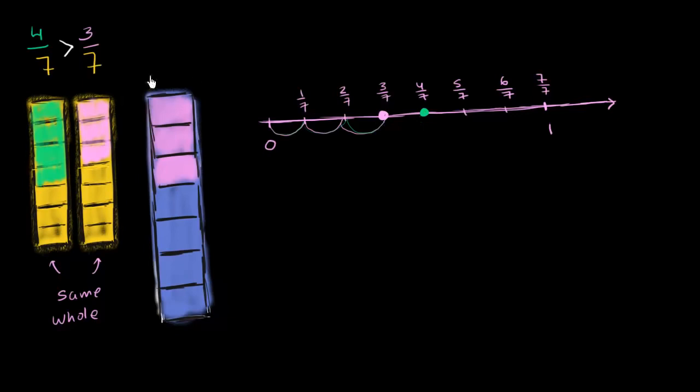So you can make this comparison, as long as you're looking at the fraction of the same whole. Here the same whole is the region of our number line between 0 and 1. In the previous video, the same whole was this yellow bar. You can't compare 4 sevenths of this yellow bar to 3 sevenths of this much larger blue bar.